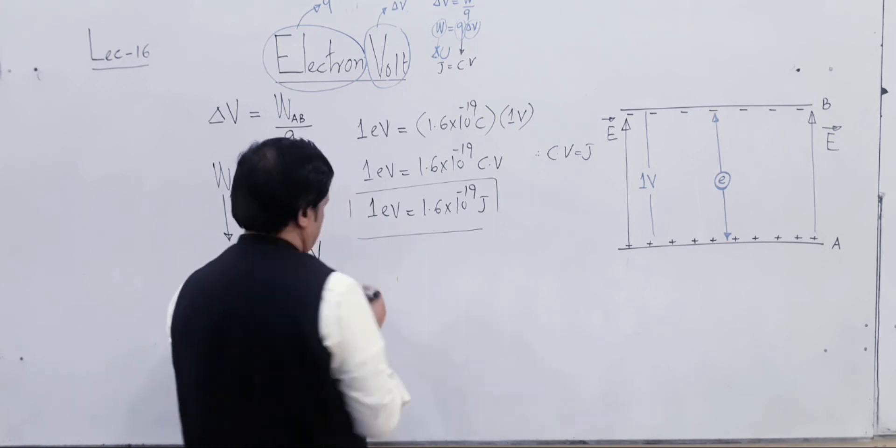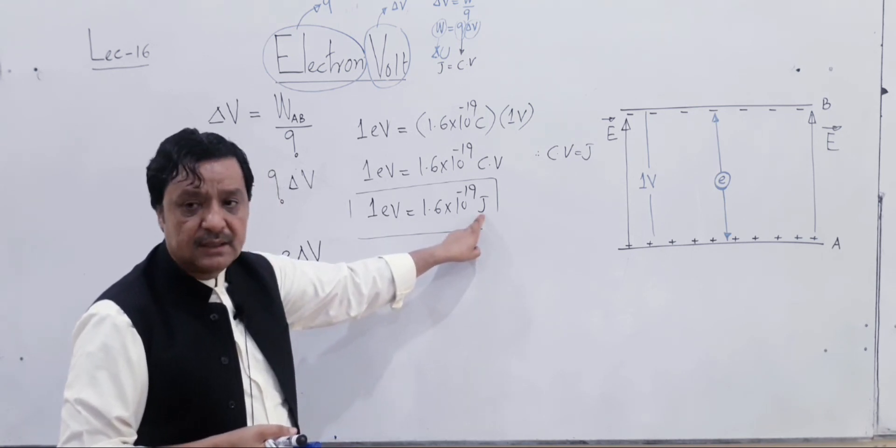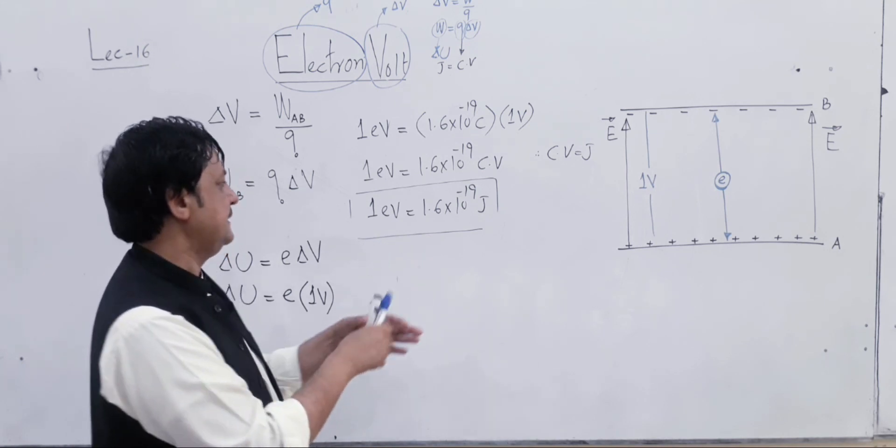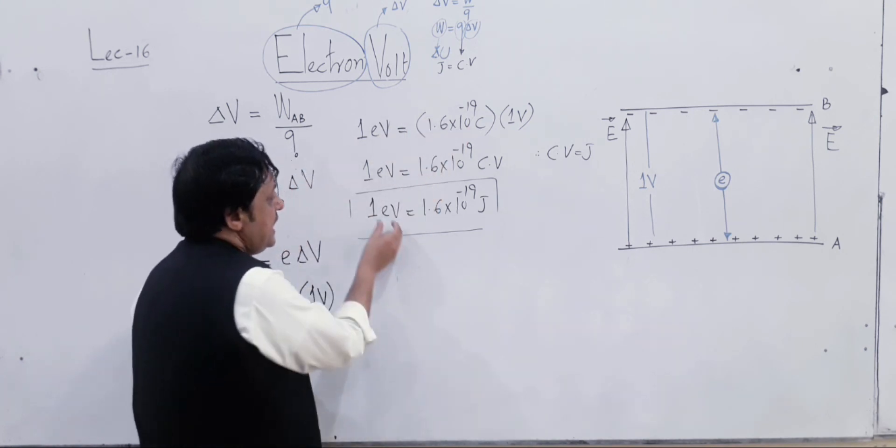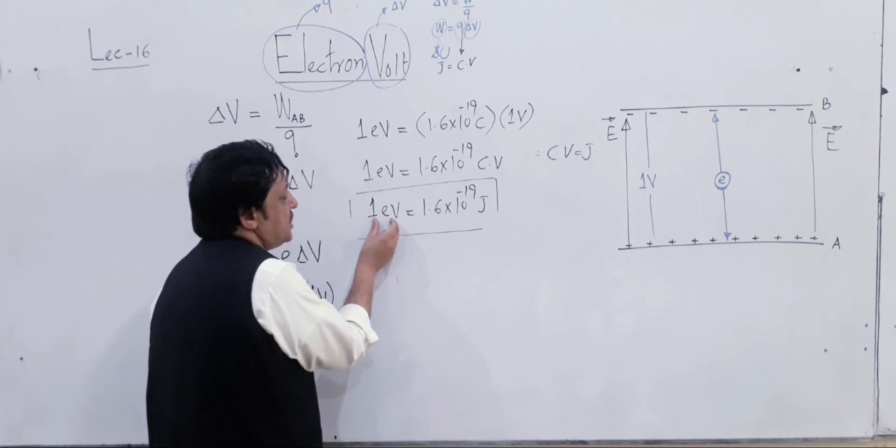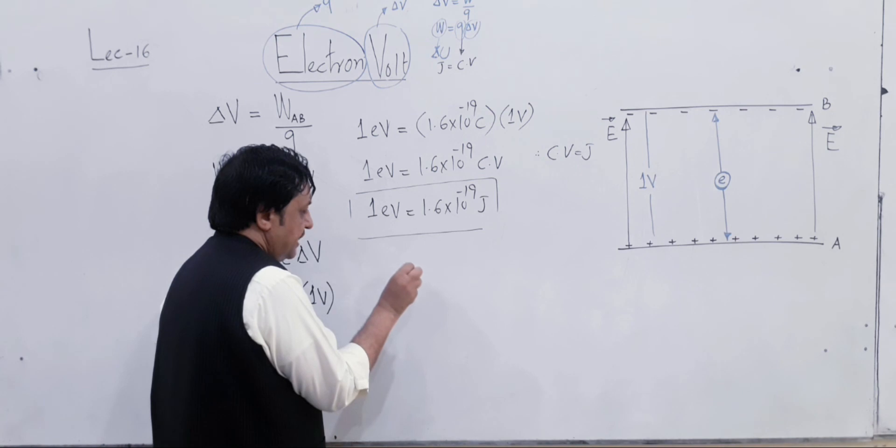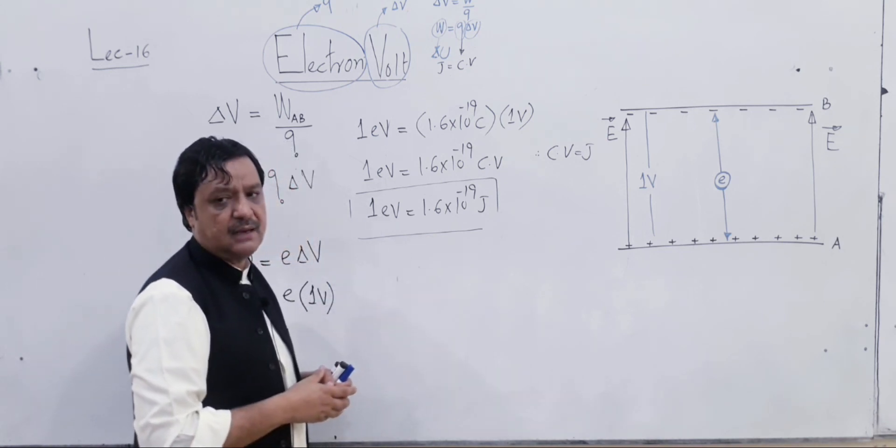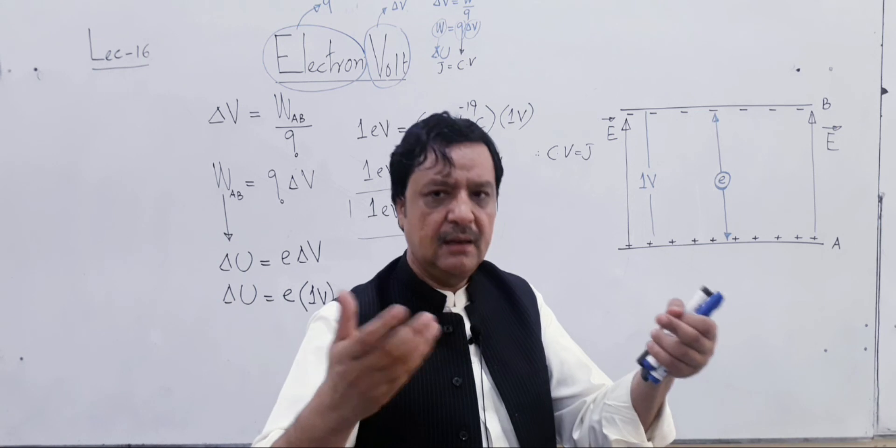Electron volt is the unit of energy because this equation's side has joule. Joule is the unit of energy in SI system. The equation must be satisfied dimensionally. Please remember, electron volt is a very small unit of energy. 1 electron volt equals 1.6 times 10 to the power minus 19 joules. This is the microscopic unit of energy, a very small unit on the atomic level. Electron volt is the amount of energy either gained or lost by an electron when moved through a potential difference of 1 volt. We will apply this unit in every chapter next course. Thank you.